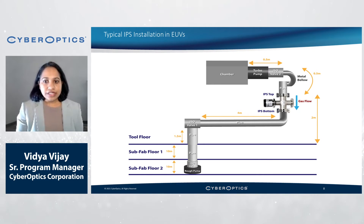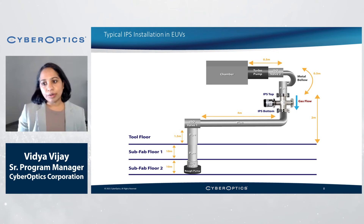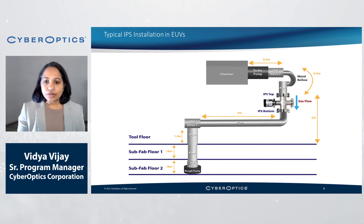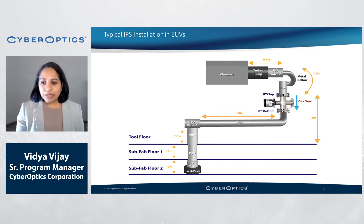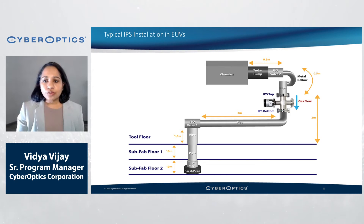Here is an example of an IPS installation at an EUV site. The IPS is usually placed in the vacuum line between the high vacuum pump, typically a turbo pump, and the roughing or fore pump. In this configuration, any particles generated in the system are concentrated and conveyed into the IPS by the turbo exhaust gas stream. However, the IPS sensor head can be placed in any area of the vacuum system where particles are expected to pass. Experience has shown that IPS will typically see the majority of particle events when the system pressure is changing or when items are moving inside the system.